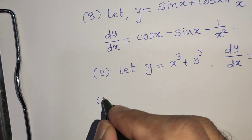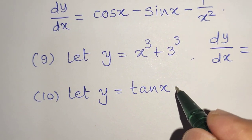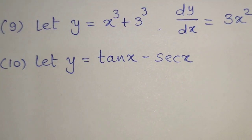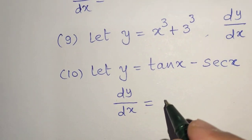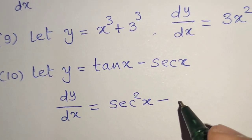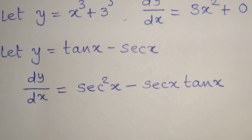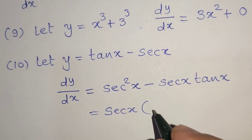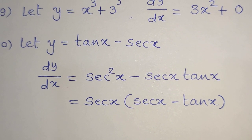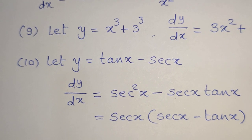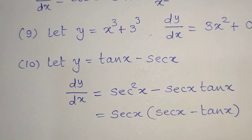The tenth example: let y equal tan x minus sec x. The derivative of tan x is sec squared x, and the derivative of sec x is sec x times tan x. So dy by dx equals sec squared x minus sec x times tan x. You can factor out sec x to get sec x times (sec x minus tan x). If you need help with the formulas, check my lecture on how to remember differentiation formulas. Thank you all!